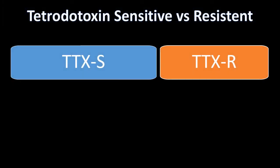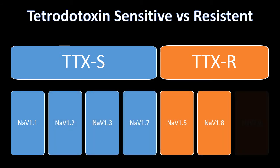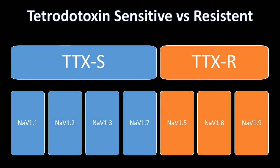There are different types of sodium channels and they can simply be divided into two categories: tetrodotoxin-sensitive, or TTXS, and tetrodotoxin-resistant, or TTXR. As we all know, local anesthetic such as lidocaine blocks sodium channels, preventing an action potential from occurring at the point that is blocked.